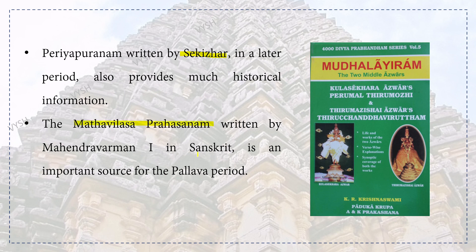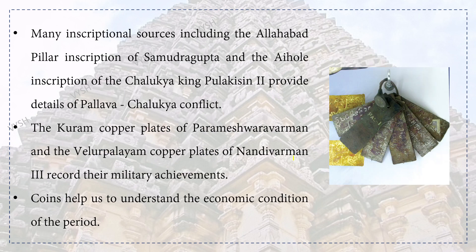The Matavilasa Prahasanam written by Mahendravarman I in Sanskrit is an important source for the Pallava period. These books are still available in modern editions and are also available on Amazon, converted into English. Many inscriptional sources including the Allahabad pillar inscription of Samudragupta and the Aihole inscription of the Chalukyan king Pulakeshin II provide details of Pallava and Chalukya conflict.